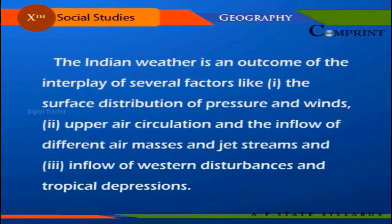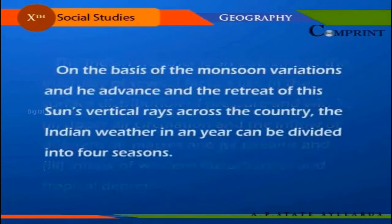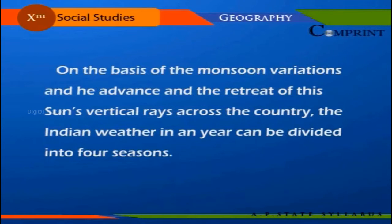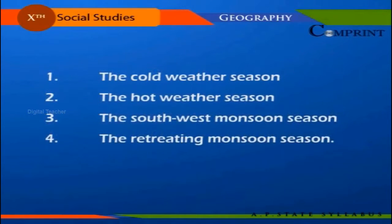The Indian weather is an outcome of the interplay of several factors: one, the surface distribution of pressures and winds; two, upper air circulation and the inflow of different air masses and jet streams; three, inflow of western disturbances and tropical depressions. On the basis of monsoon variations and the advance and retreat of the sun's vertical rays across the country, the Indian year can be divided into four seasons.